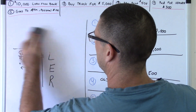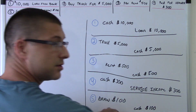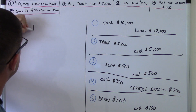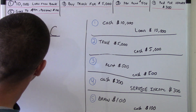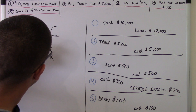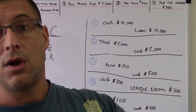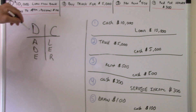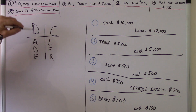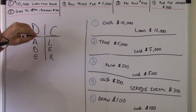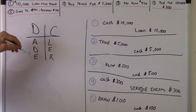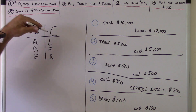DCAidler — if you don't know what that is, watch the first video please. Debit, Credit, Asset, Draw, Expense — those are on the debit side. Credit, Liability, Equity, Revenue — those are on the credit side. DCAidler.